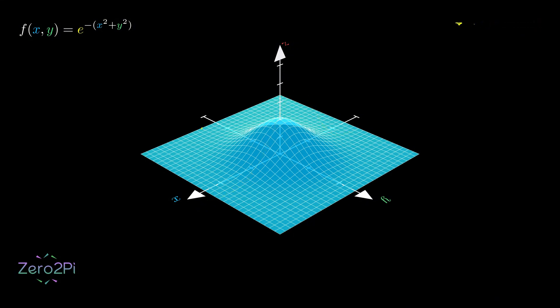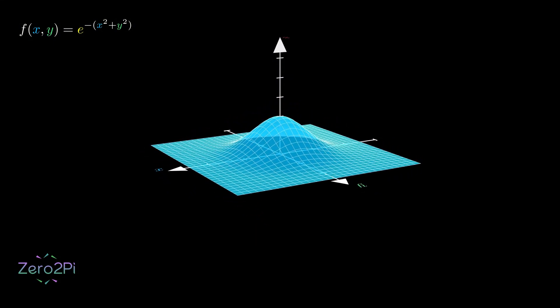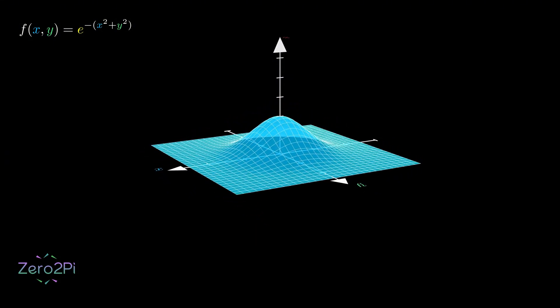For doing the same for y, we hold x constant, which again gives us a 2D curve on a different slice of the surface. And as we move along this new path, where only y is changing, the slope of the tangent line gives us the partial derivative with respect to y. So, that's the core idea. Partial derivatives let us handle complex 3D surfaces by breaking the problem down into simple 2D slopes that we already understand.